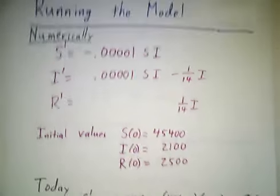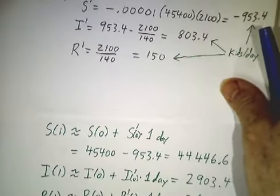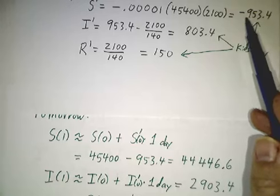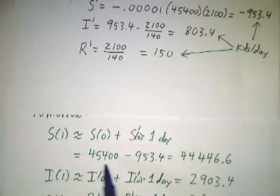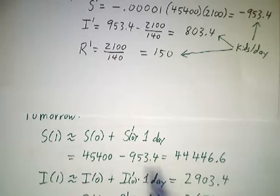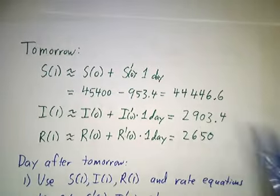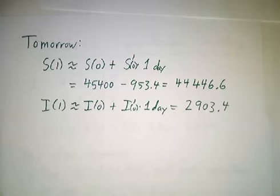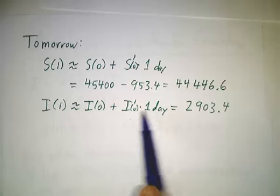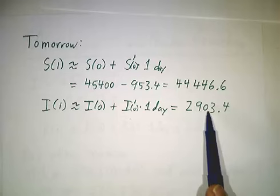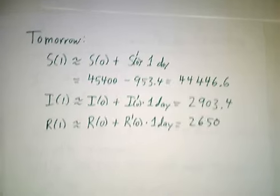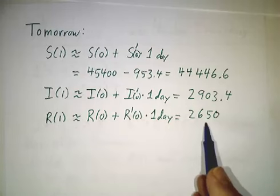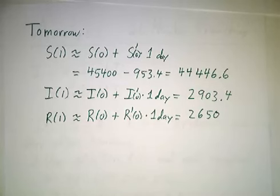If you know how fast something's changing, you should be able to figure out where we're going to be tomorrow. If the number of susceptible is dropping at a rate of 953.4 per day, then the number of susceptibles tomorrow should be the number of susceptibles today minus 953.4. So we should expect the number of susceptibles tomorrow to be around 44,446.6. The number of infected tomorrow is 2,100 plus 803.4, which is 2,903.4. The number of recovered was 2,500 plus 150, which makes 2,650.